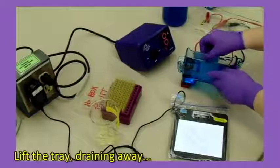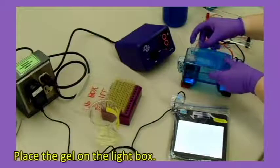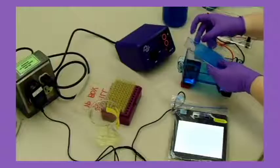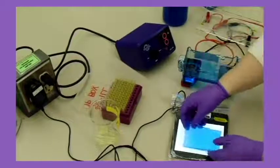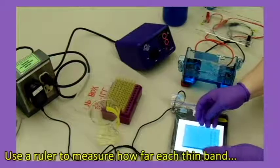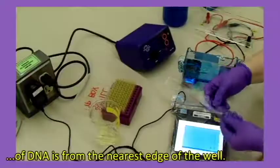Lift the tray, draining away as much buffer as possible. Place the gel on the light box. Use a ruler to measure how far each thin band of DNA is from the nearest edge of the well.